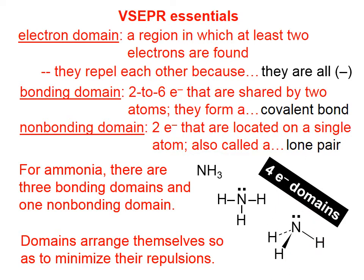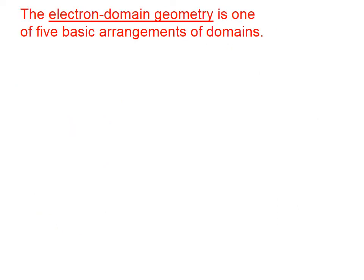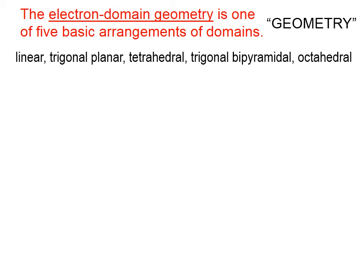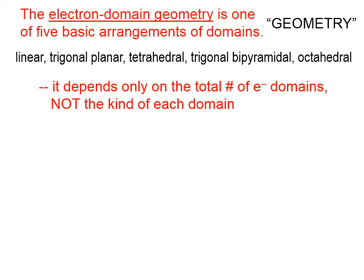Four domains results in a tetrahedral geometry. The electron domain geometry is one of five basic arrangements of domains. Sometimes the electron domain geometry is shortened to just geometry. And the five basic arrangements are those shapes that were mentioned a couple of slides ago: linear, trigonal planar, tetrahedral, trigonal bipyramidal, and octahedral. The electron domain geometry depends only on the total number of electron domains, not the kind of each domain. In other words, it doesn't matter with regard to electron domain geometry how many bonding and how many nonbonding domains we have. Just the total number determines what the electron domain geometry is. And that number is associated with one of those five basic arrangements.